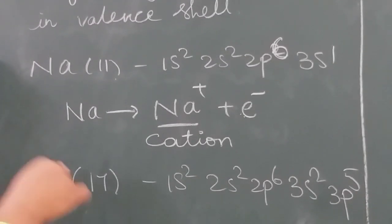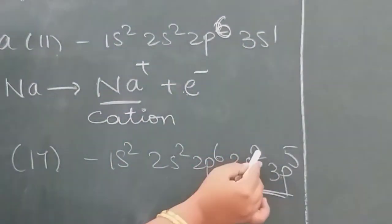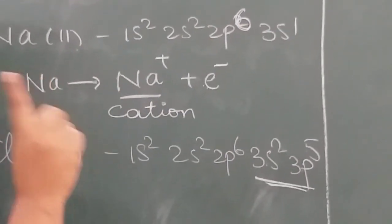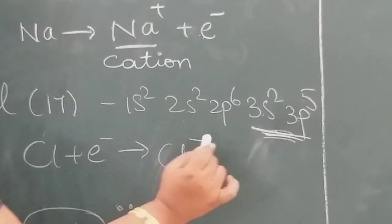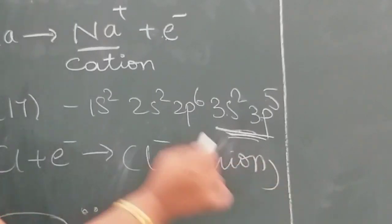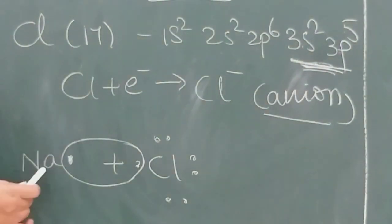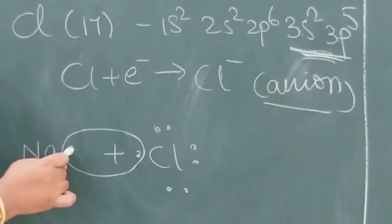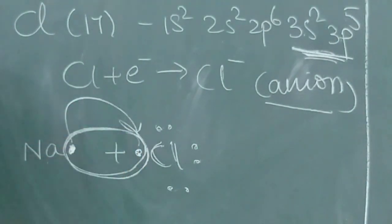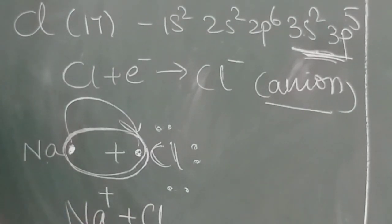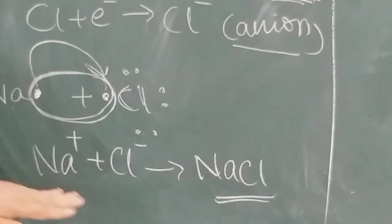Looking at chlorine: atomic number 17, electronic configuration 1s2, 2s2, 2p6, 3s2, 3p5. It has 7 electrons in the valence shell and needs one more electron to achieve the octet. This electron is taken from sodium. Cl takes this electron and becomes a negatively charged ion called an anion. Positively charged ions are called cations; negatively charged ions are called anions. In Lewis dot structure, Na has one electron and Cl has 7, so the electron transfers from sodium to chlorine: Na+ plus Cl− gives rise to NaCl — sodium chloride.